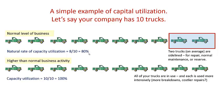If your company experiences higher-than-normal business activity — things are really booming — you'll likely put all your trucks into use. Each will be used more intensively, more miles, leading to more breakdowns and costlier repairs. Your capacity utilization rate in this case is 10 out of 10, or 100%, though we rarely reach 100% in real life.